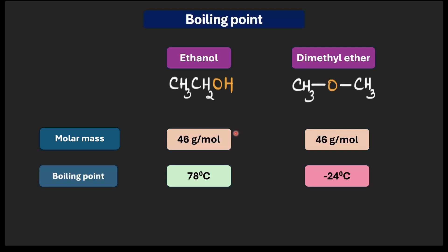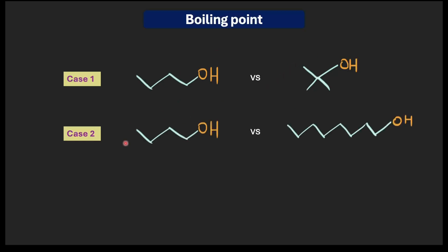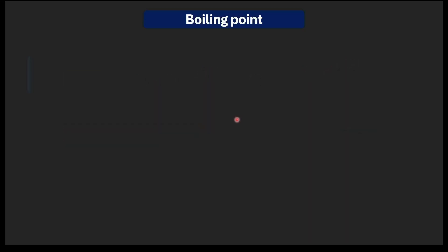There's a small twist though: even among alcohols, boiling points can vary substantially. For example, if we compare a straight-chain alcohol with a branched-chain alcohol, or compare two alcohols of very different molecular mass — even though they all have the same OH group — their boiling points can differ substantially. So what factors determine which alcohol would have a higher boiling point?